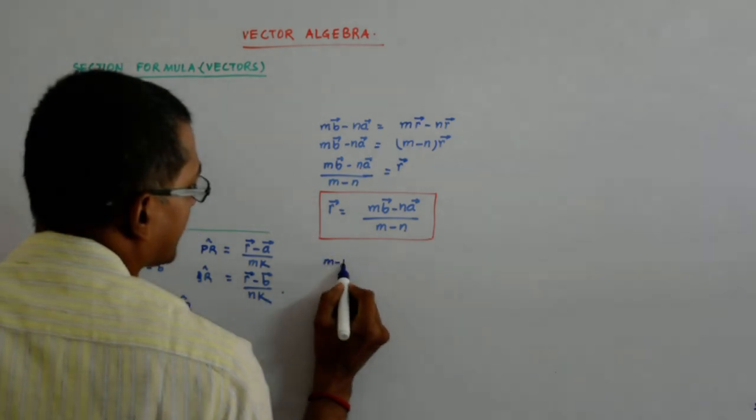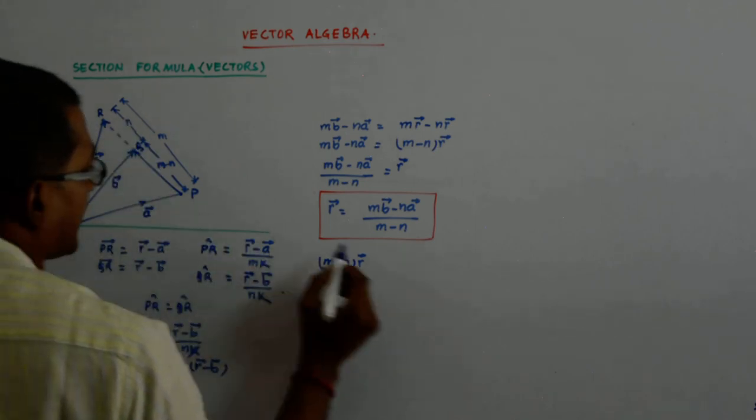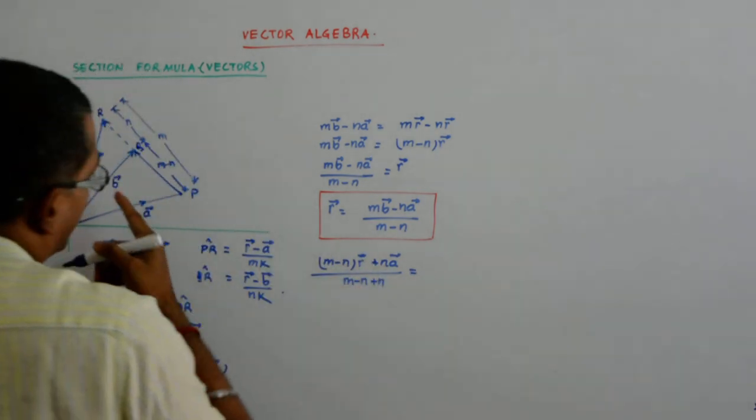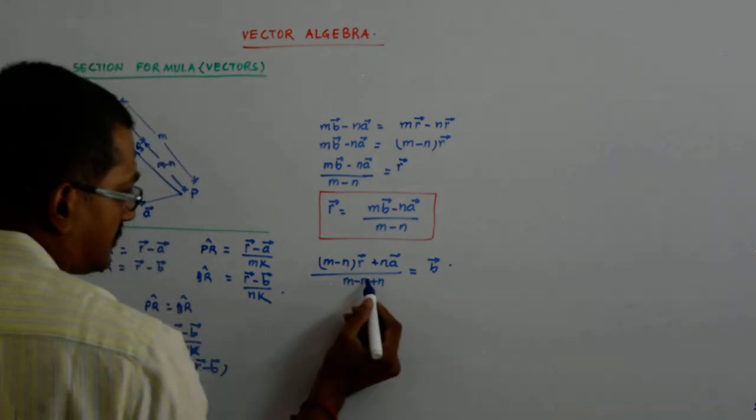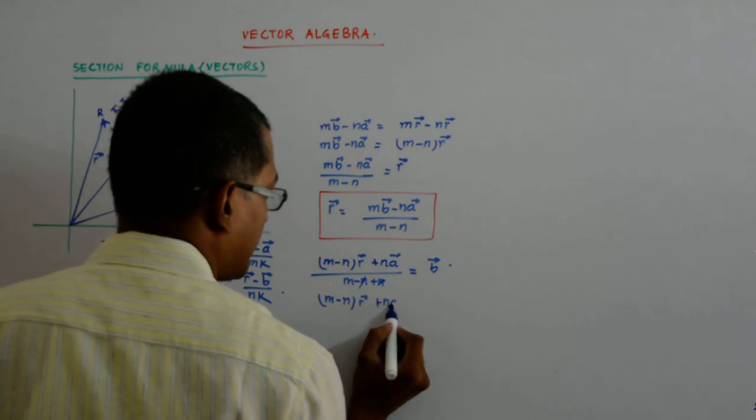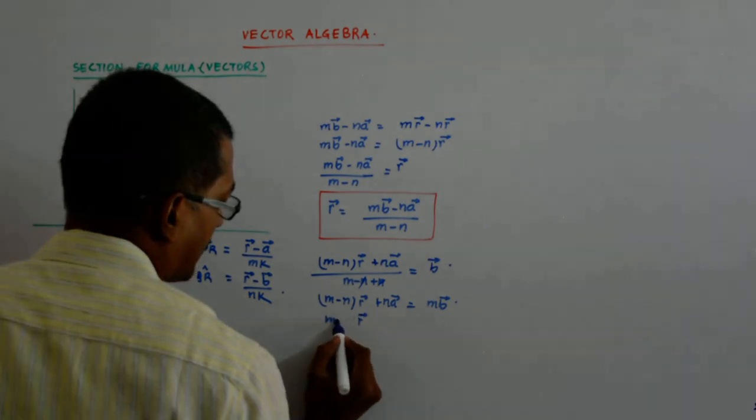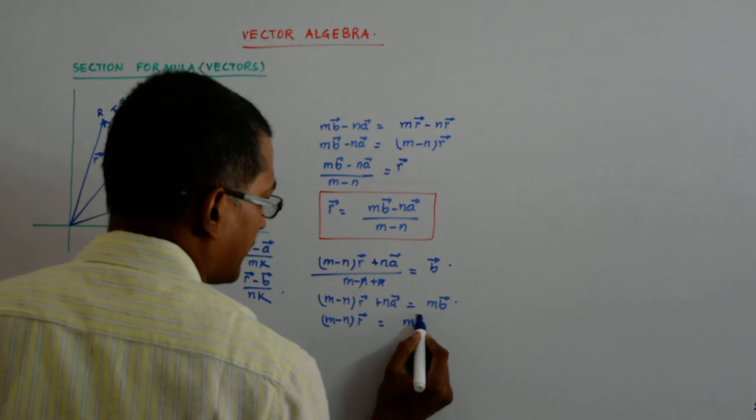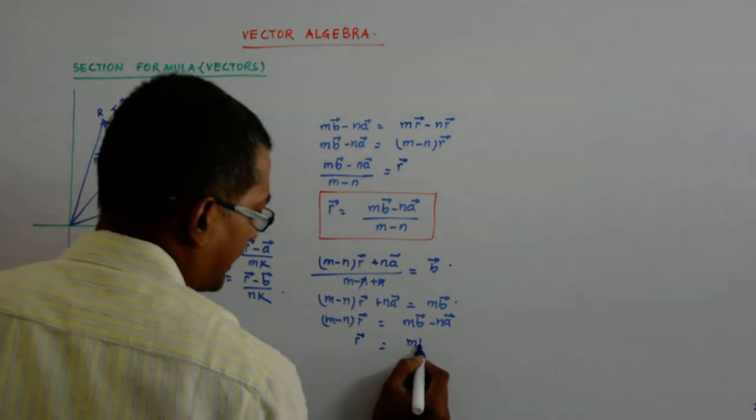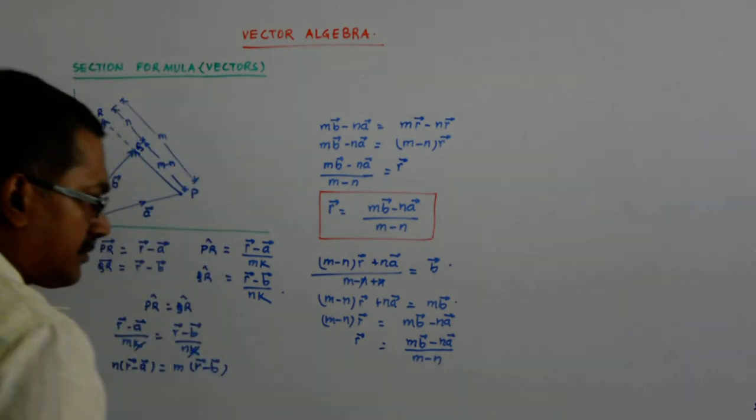So it would have given us M minus N into R plus NA upon M minus N plus N is equal to B. So it becomes M into R, and R would have become MB minus NA upon M minus N, which would have given you the same result.